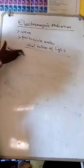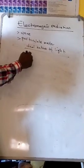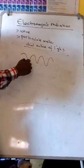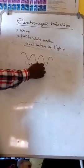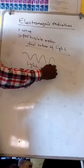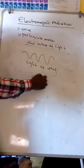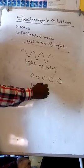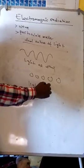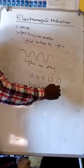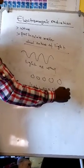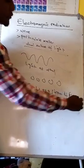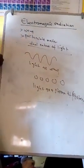Light can behave as a wave. Light as a wave can also behave as a stream, as a stream of photons. This is the dual nature of light.